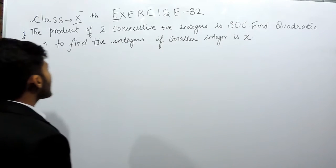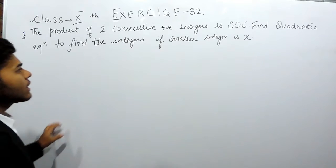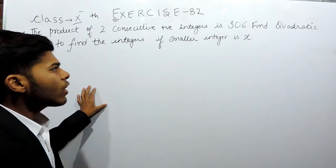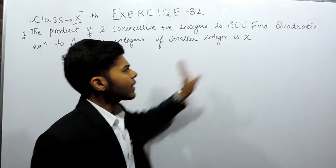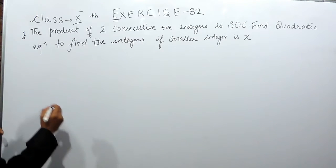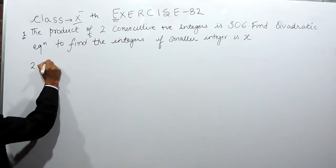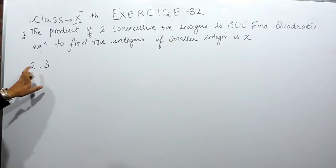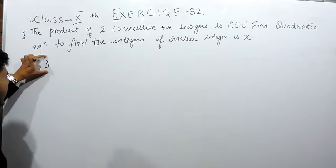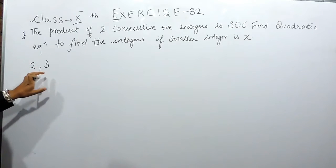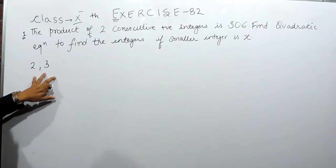We have to form a quadratic equation to find the integers, and we are also given that the smaller integer is x. Consecutive numbers are basically those numbers, for example 2 and 3. They come one after another, means 3 comes after 2. So 2 and 3 are consecutive integers.